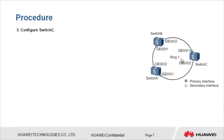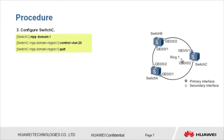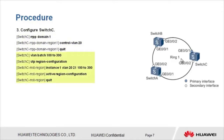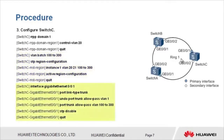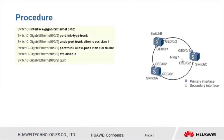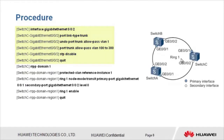Thirdly, configure Switch C. Create RRPP domain 1 and control VLAN 20. Create allowed data VLANs 100 to 300. Map instance 1 to control VLANs 20 and 21 and data VLANs 100 to 300. Configure GE001 and GE002 as trunk interfaces, allowing VLANs 100 to 300 to pass through, and disable STP on both. Specify the protected VLANs, create and enable an RRPP ring, and enable RRPP.